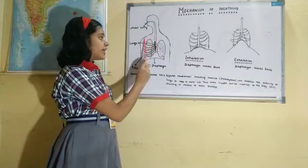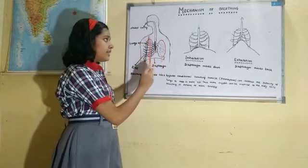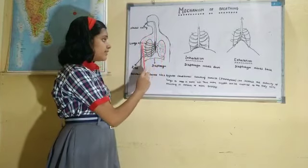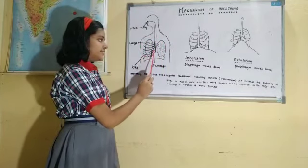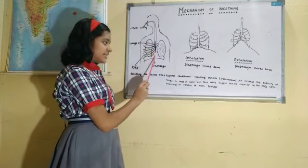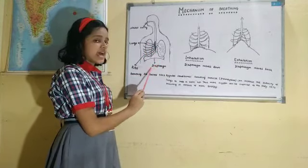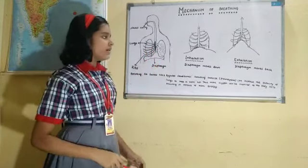The lungs are located in the chest cavity. The lungs are surrounded by ribs. On the floor of the chest cavity lies a muscular sheet known as the diaphragm.